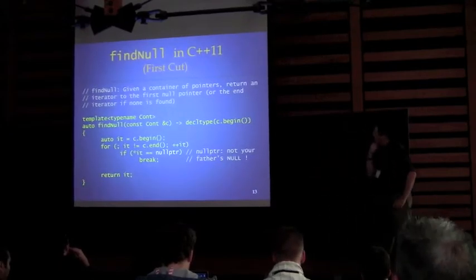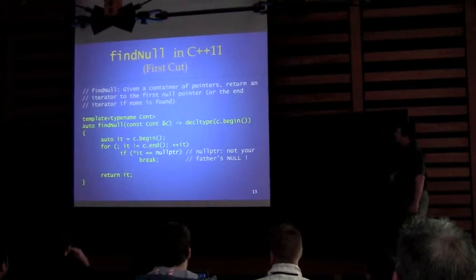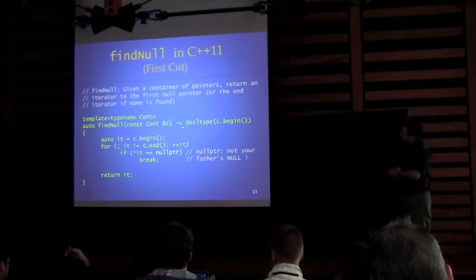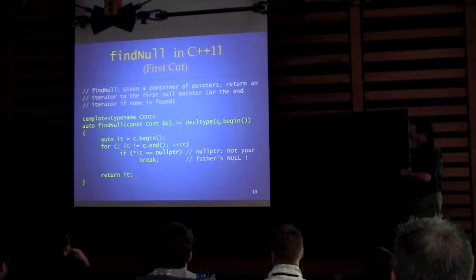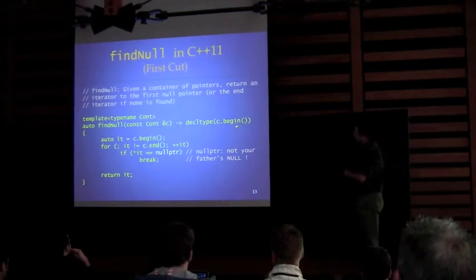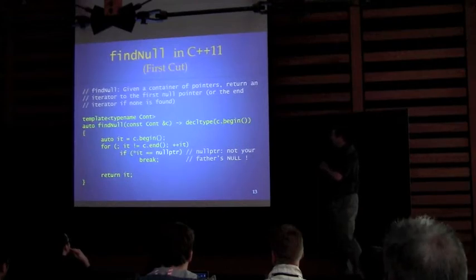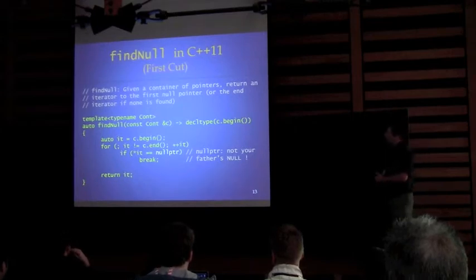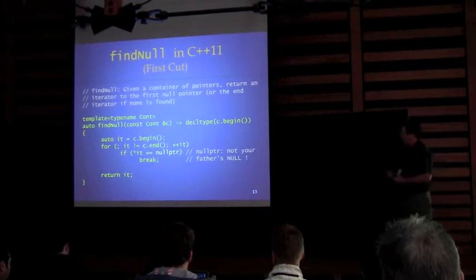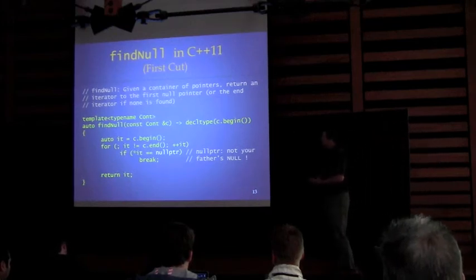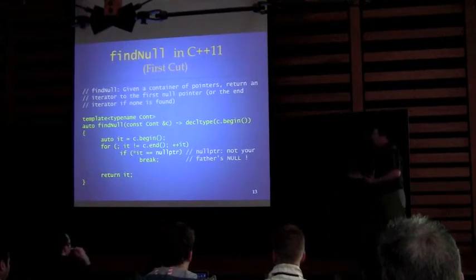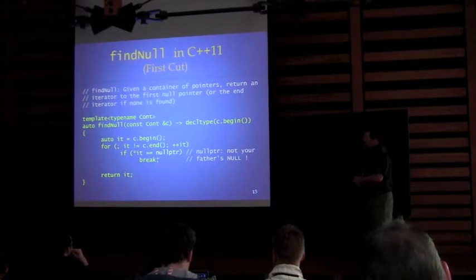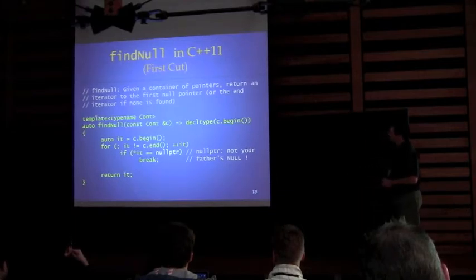Going back to the findNull function template and applying these features: we use auto and the trailing function return type, so it returns the decltype of whatever the iterator is for the container. Where we were testing against zero, we now use the nullptr keyword. Instead of putting zero — which doesn't really provide self-documentation — nullptr says this has to be some sort of null pointer, and it will compare true against any pointer that's null. If it's not a pointer type, it won't even compile, making it a way of catching more potential errors at compile time.